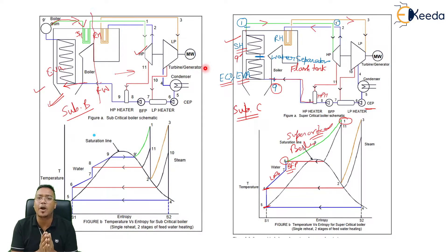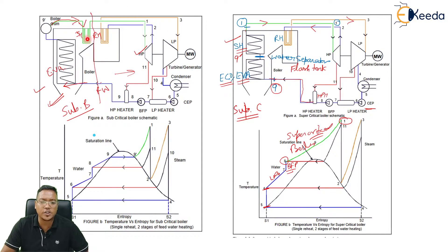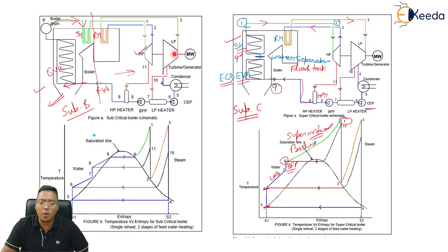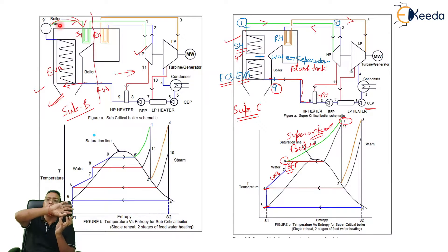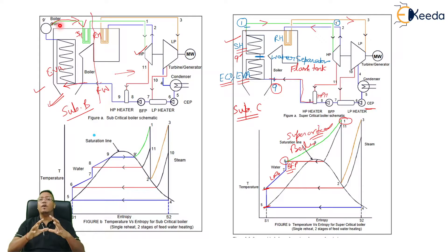How does a supercritical boiler work? First, this is the subcritical boiler. The steam from the drum goes into the superheater, then superheated steam goes into the HP turbine. After expansion in the HP turbine, steam goes into the reheater, then into the LP turbine, then into the condenser. From the condenser through CEP and BFP it goes into the boiler, into the evaporator, then evaporator to drum. From the drum, steam separates from water and goes into the superheater. This is the working of a subcritical boiler.